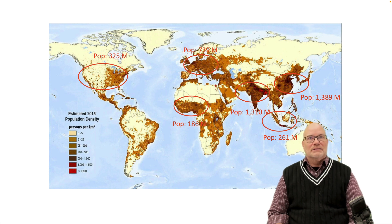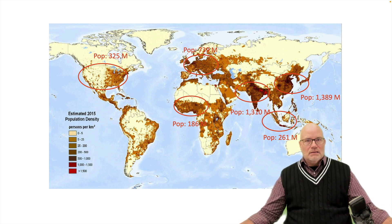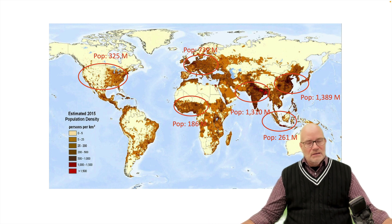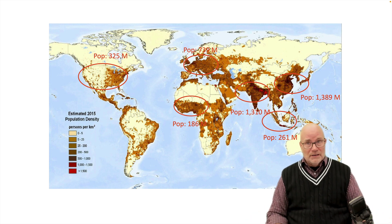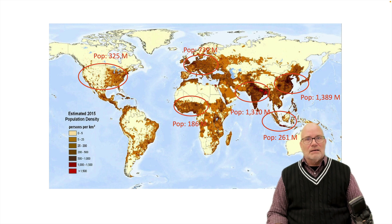That's a static look at the data, and all else being equal, you would expect food demand in China to be greater than that for the United States and Europe, since China has more people. However, income and income growth plays an important role in that over time.